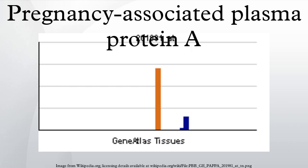Low plasma levels of this protein have been suggested as a biochemical marker for pregnancies with aneuploid fetuses. For example, low PAPP-A may be seen in prenatal screening for Down syndrome.